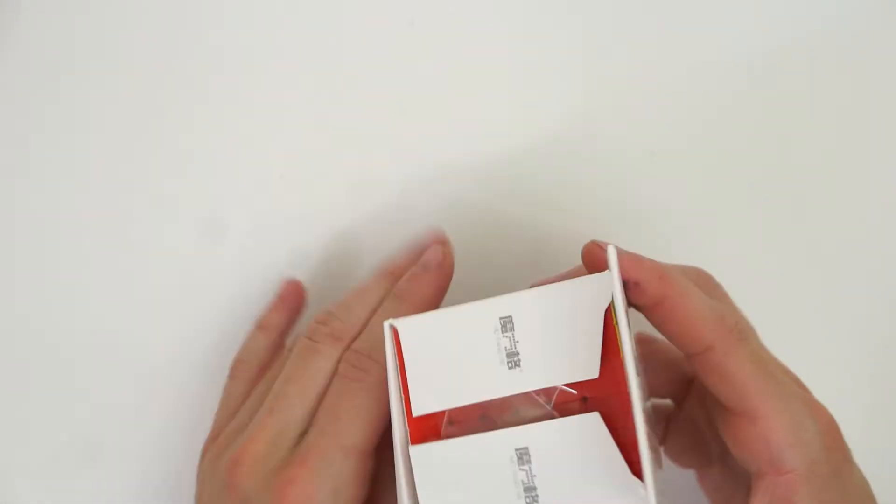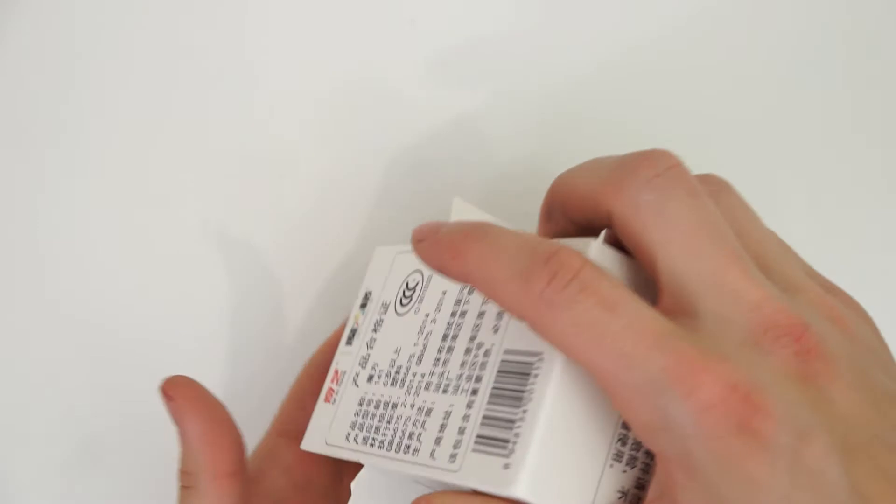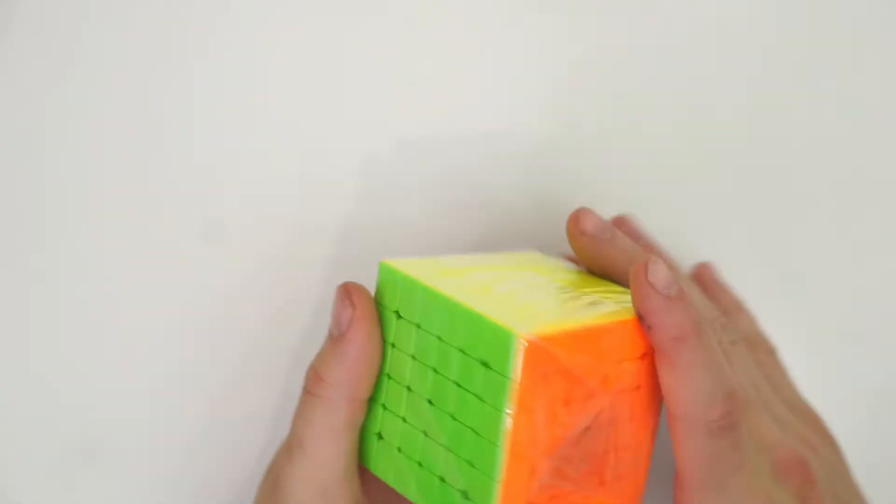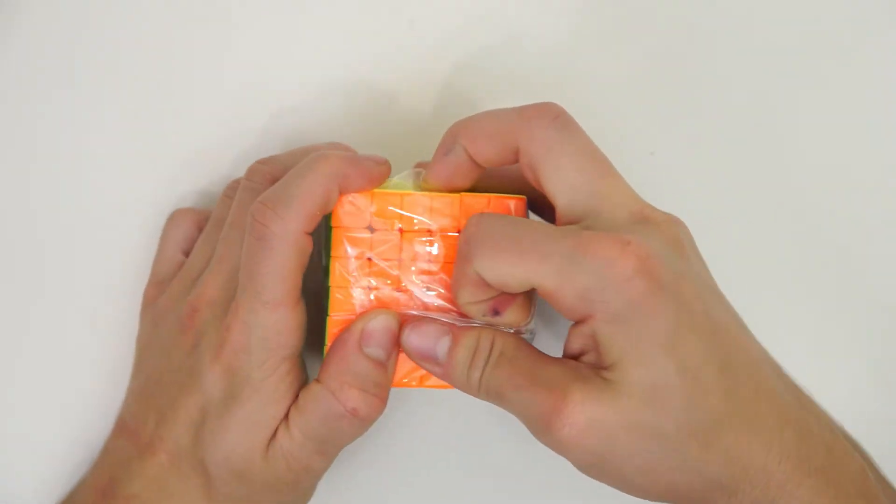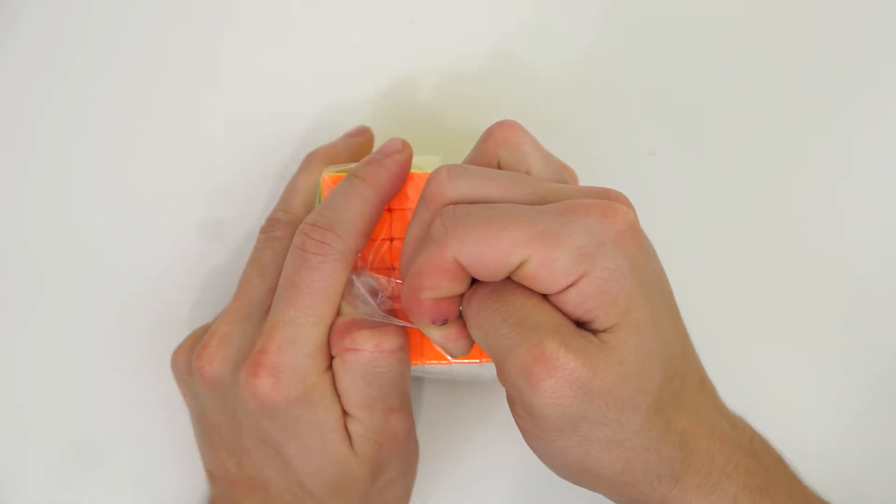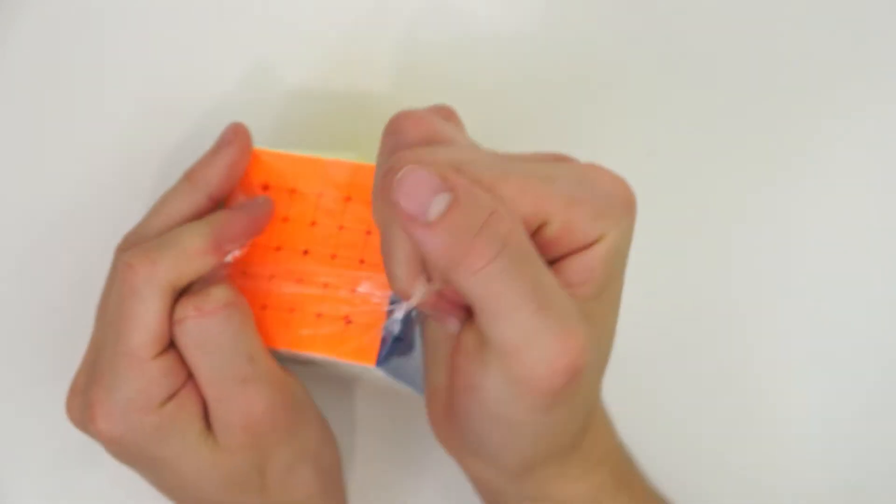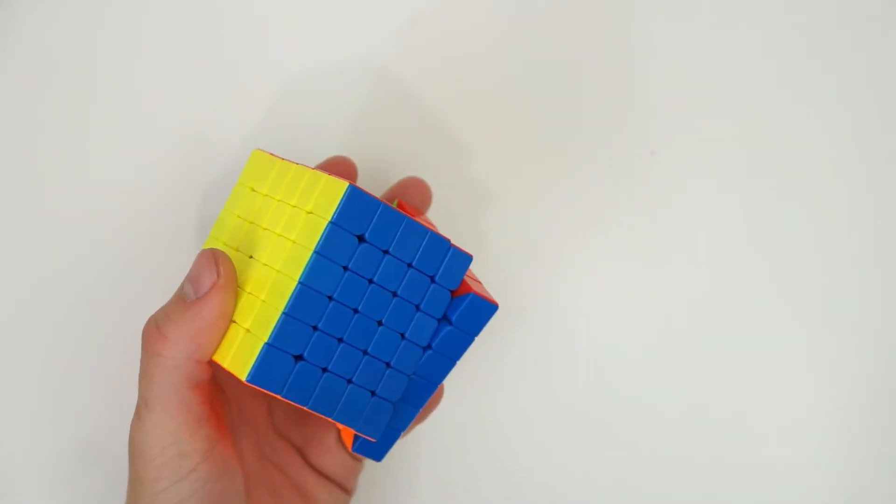So, this is the Chi Yi Wuhua, or Wahua, however you want to say it. Now, as you might recall, I've actually done a review of this puzzle in black. That puzzle actually... Oh, there we go.